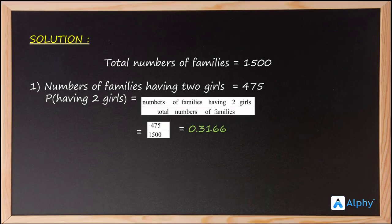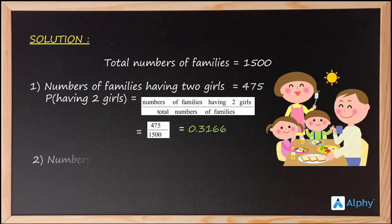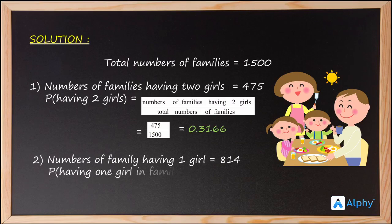With a similar equation we can find the answers for the other two events. The number of families having one girl is 814, so the probability of having one girl is 814 by 1500, which equals 0.5426.